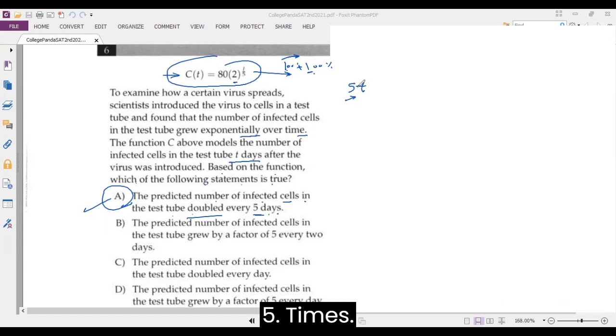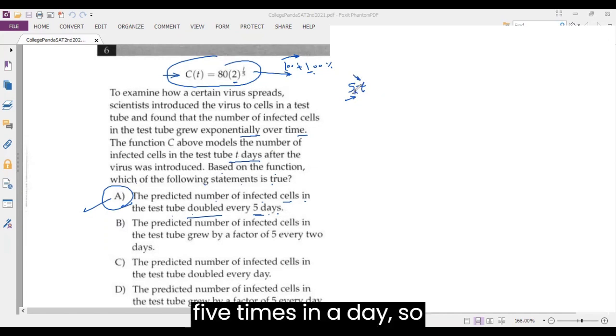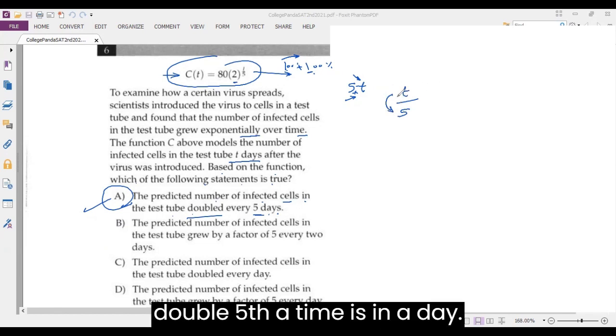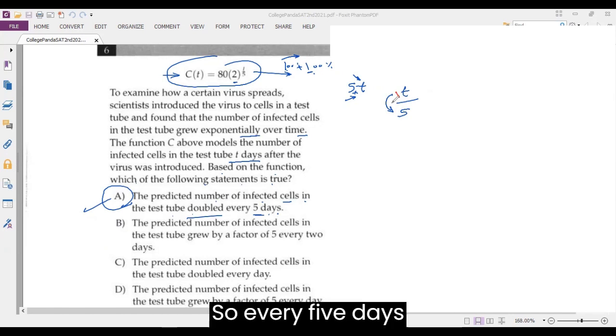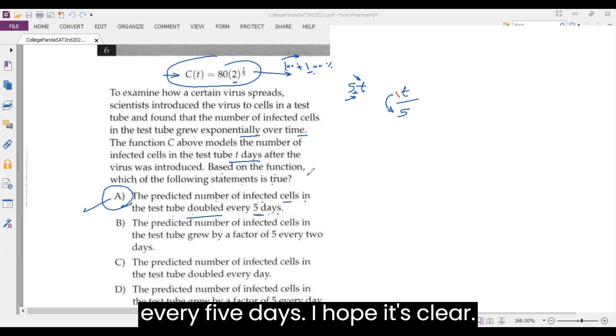Five times T, but here five is a denominator. It's not five times in a day, it doubles every five days. So every five days, the five should be one full unit. So it doubles one time every five days. I hope it's clear.